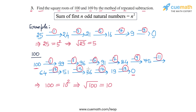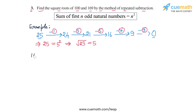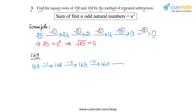Now let's find the square root of 169 in a similar manner. We have 169 and we start by subtracting 1, that gives us 168. Then we subtract 3, that gives us 165. Then we subtract 5, that gives us 160. Then we subtract 7, that gives us 153. Then we subtract 9, that gives us 144.